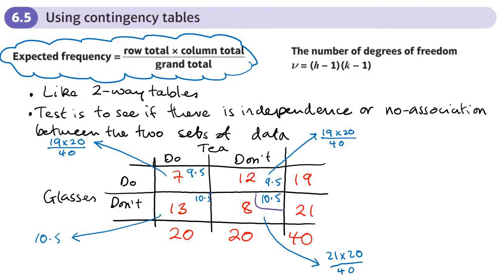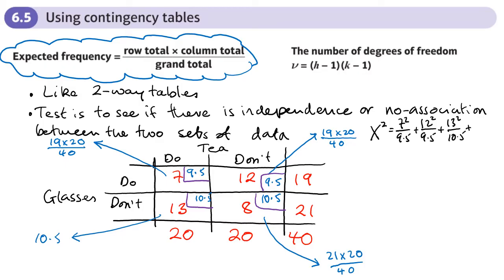These numbers in blue represent what we'd expect to get — these are the expected frequencies. X-squared is going to be the sum of each observed squared over its expected: 7 squared over 9.5, plus 12 squared over 9.5, plus 13 squared over 10.5, plus 8 squared over 10.5.